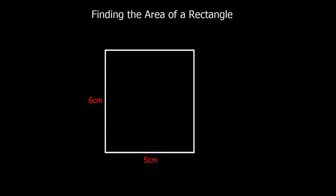This video is about finding the area of a rectangle. Whenever we're measuring area, we measure it in squares. In this case, the units are centimetres, so we're going to measure it in centimetre squares. How many one centimetre by one centimetre squares are going to fit in this shape? That's the question.